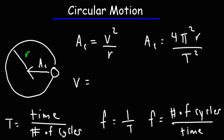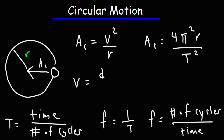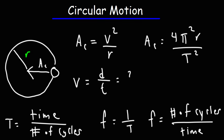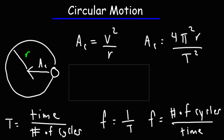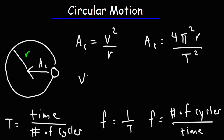You can calculate the speed of the ball as it moves around the circle. Speed is distance over time. The distance around the circle is the circumference, which is 2 pi r. The time it takes to make one trip is, by definition, the period. So the formula to calculate speed is 2 pi r divided by the period, since that's the time it takes to travel one cycle.